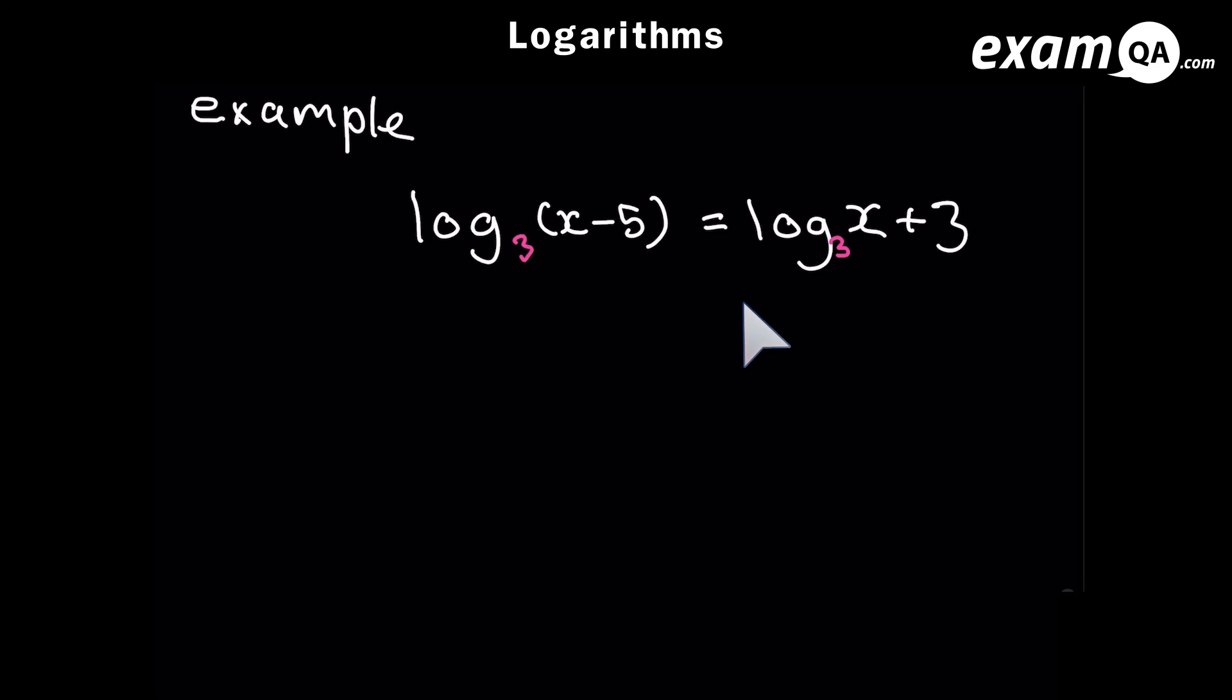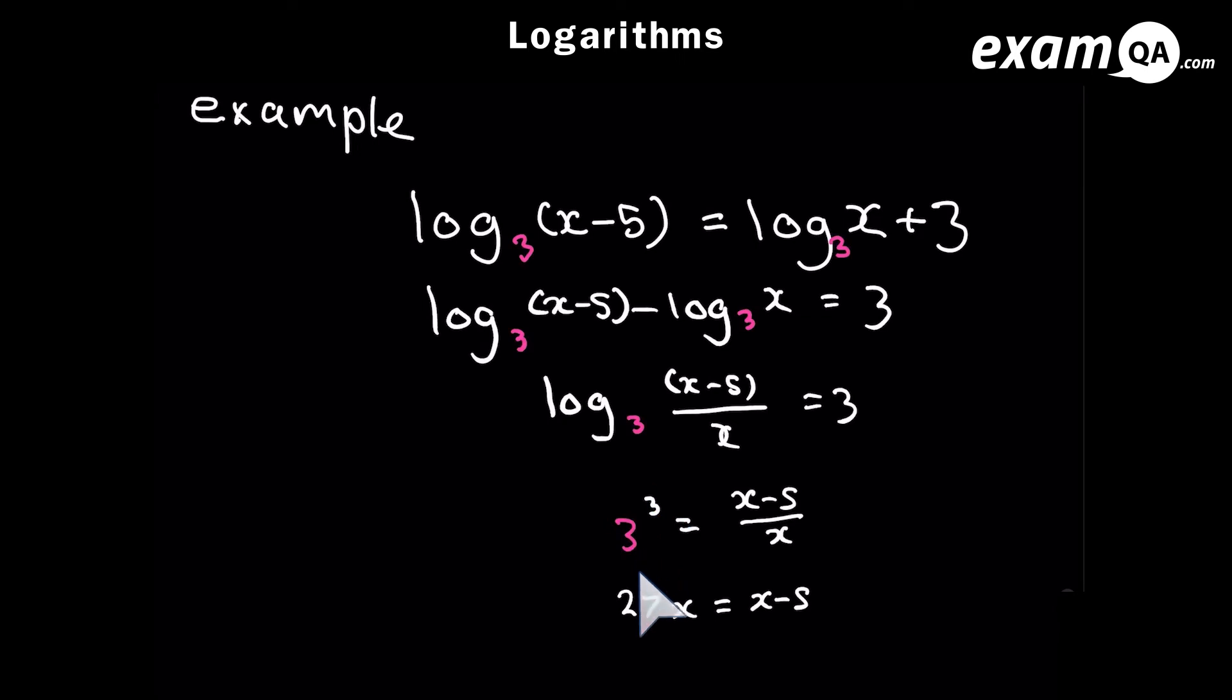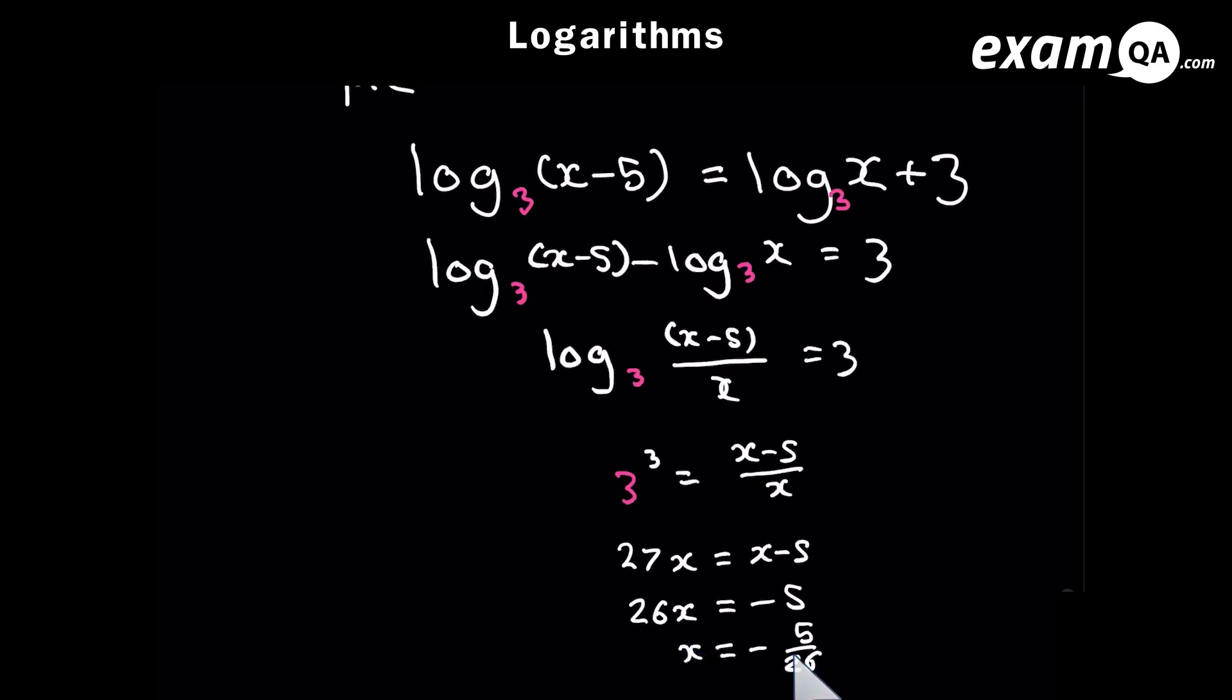So let's look at this example. We need to get the logs on one side first. And now we can use that rule because we've got a minus sign between them and the bases are the same. Now we've got it in single log form. The trick is to get it out of log form. So the 3 cubed becomes 27. And we simply multiplied both sides by x. And we've managed to solve what x is.